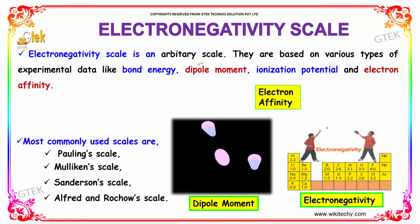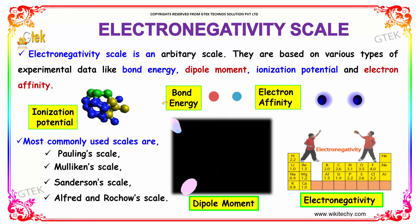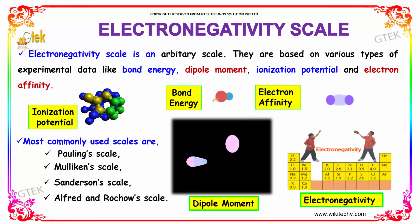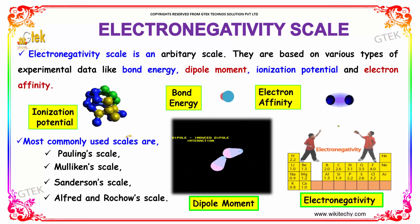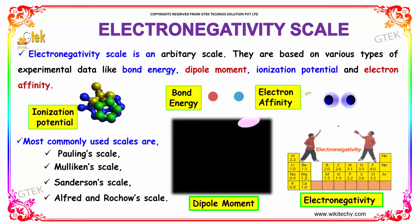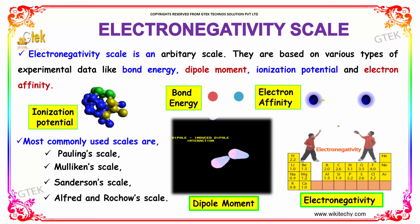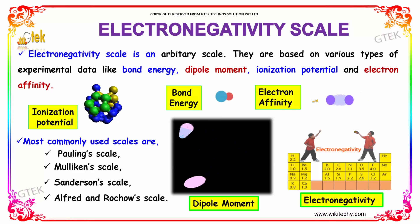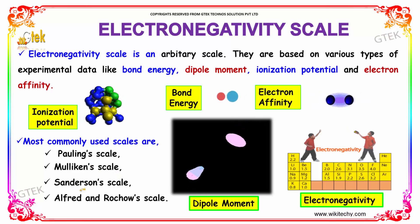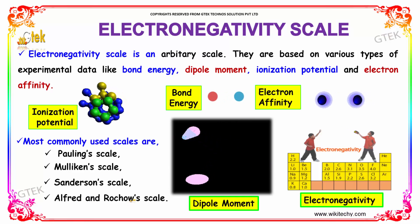The electronegativity scale is an arbitrary scale. They are based on various types of experimental data like bond energy, the dipole moment, the ionization potential, and the electron affinity. The most commonly used scales are the Pauling scale, Mulliken scale, Sanderson scale, and the Alfred and Rocha scale.